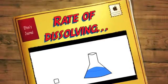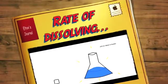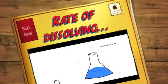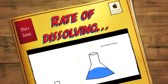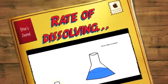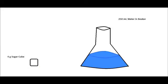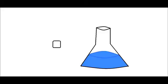We start our experiment with a glass beaker filled with 250 milliliters of water and a 4 gram sugar cube. First, we place the sugar cube inside of the beaker.